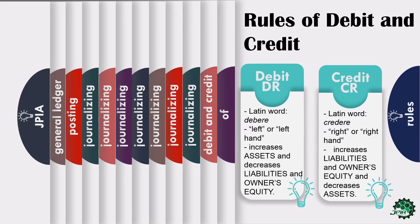Credit came from the Latin word credere, which means to entrust. It is located on the right side of the T-account. Conversely, it increases liabilities and owner's equity and decreases assets.